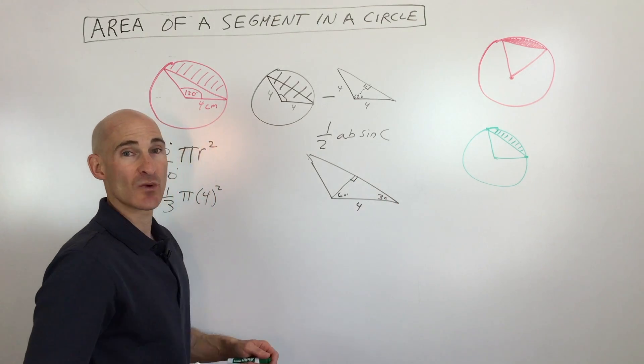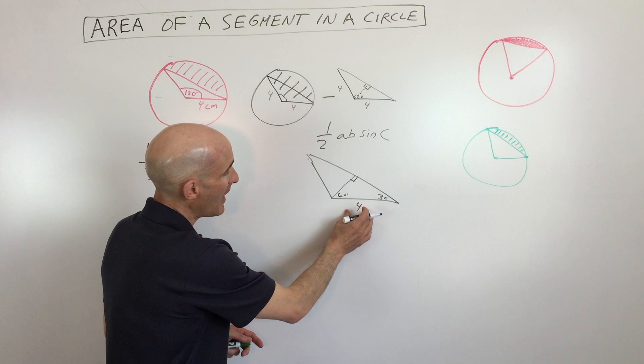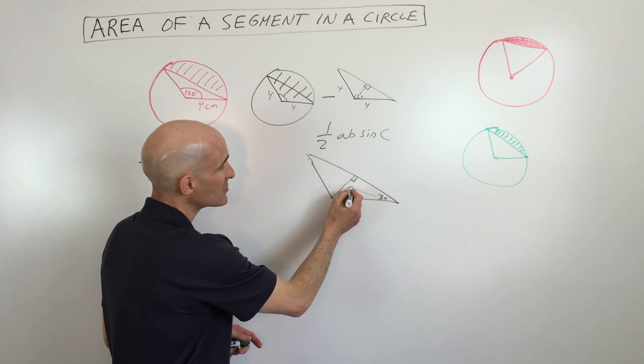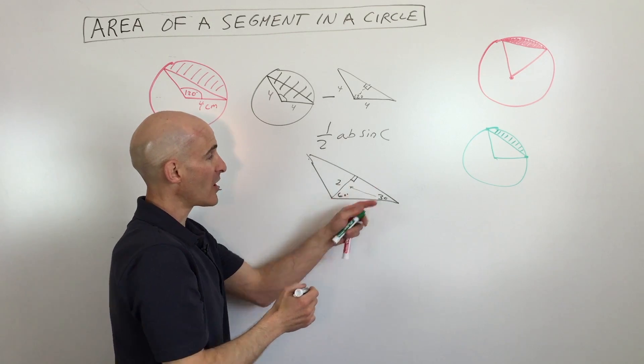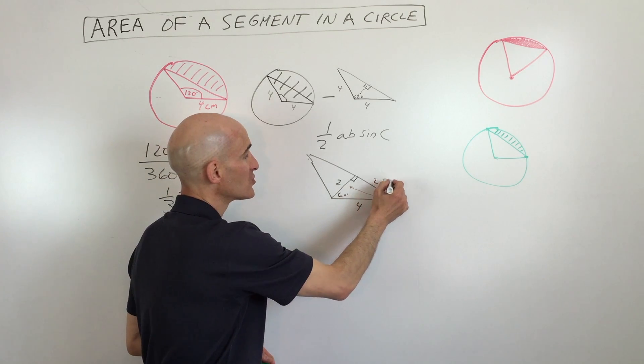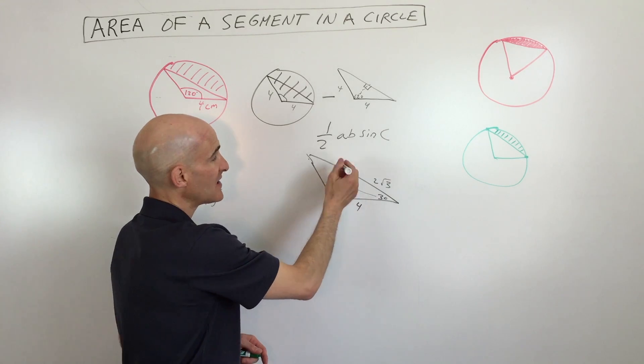What we have is a 60 degree angle like so. This is 4, this is 30, this is 90. So we have a 30-60-90 special right triangle. If the hypotenuse is 4, the side across from the 30 degree angle is going to be 2, and then the one across from the 60 degree angle is going to be 2 square root of 3. This triangle is the exact same, so this will also be 2 square root of 3.